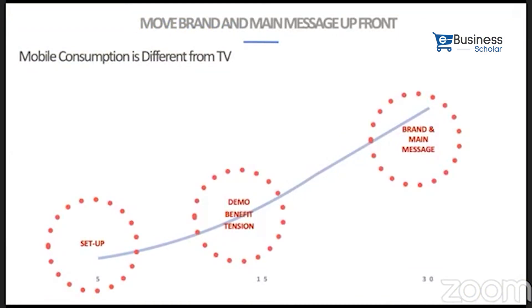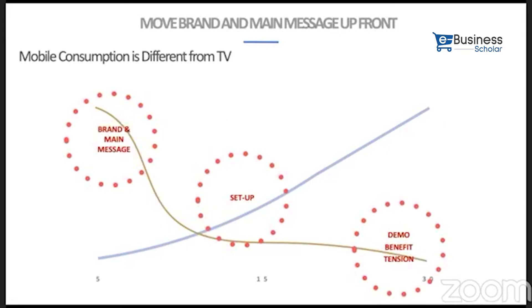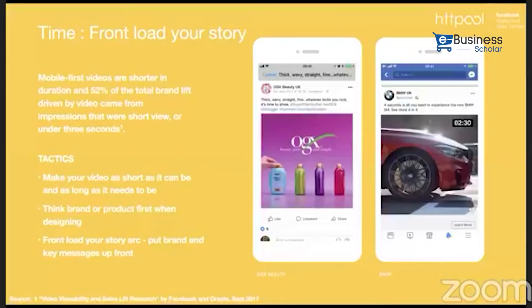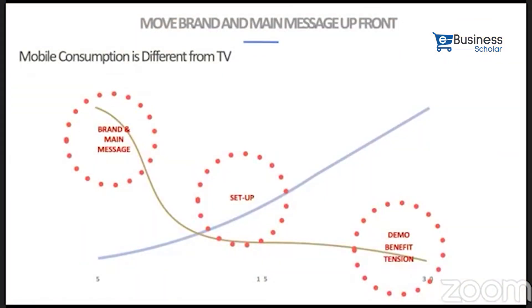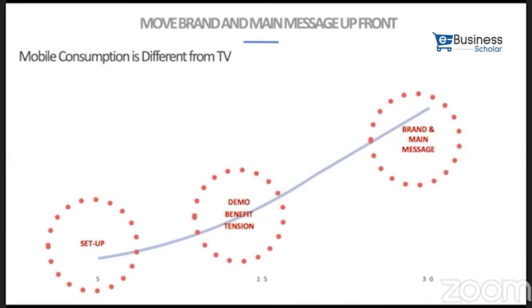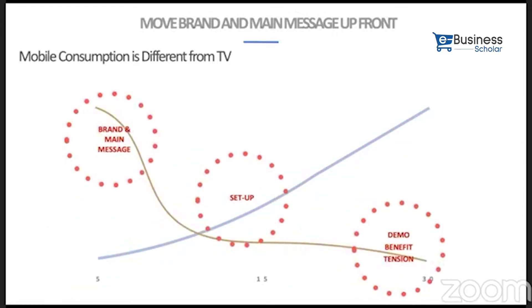Mobile consumption is different from TV — communicate as if people are leaving. We don't have 30 seconds and cannot expect people to wait 25 seconds to learn the benefit or who the advertiser is. The scrolling thumb keeps content rolling. The traditional route sets up communication, then demo and benefit, and only after 25 or 30 seconds shows the brand message. But in digital, in the Facebook mobile-optimized version, this is reversed — put the brand message first, then build up the next parts.